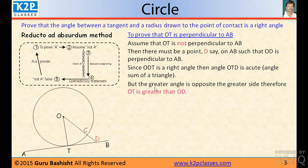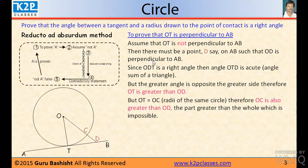But the greater angle is opposite the greater side. Since this is 90, the side OT must be greater than OD. But OT equal to OC because OT and OC are radii of the same circle. Therefore, OC is also greater than OD. The part greater than whole which is impossible because OC is the part of line OD. And OD must be OC plus CD.